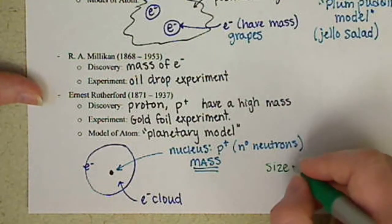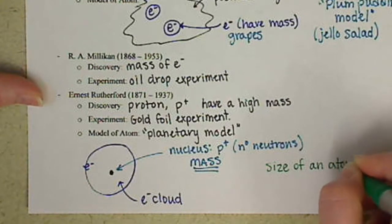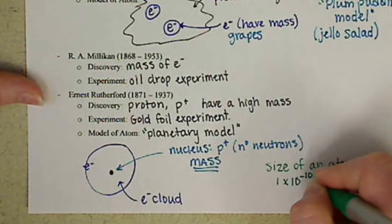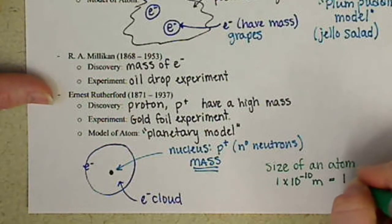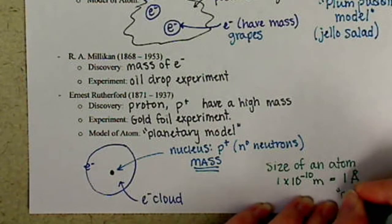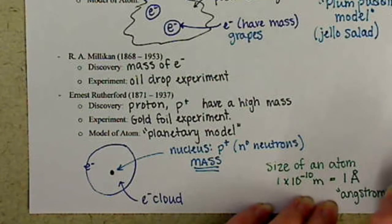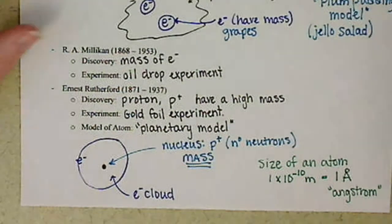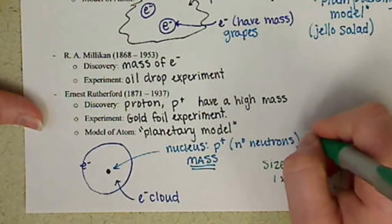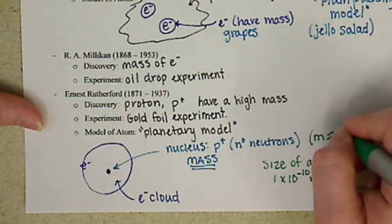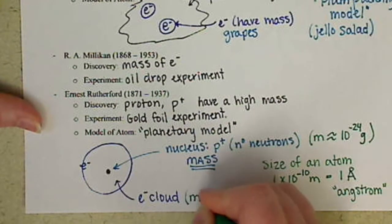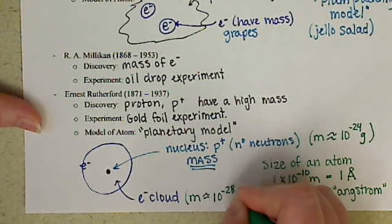You're going to watch a video next about the size of an atom. Kind of a cool video with some really cool animations. Basically it's 1 times 10 to the negative 10 meters, which we give a special unit to. We call it an angstrom, and that's a capital A with a little dot or degree symbol on top. We call this an angstrom. And the approximate mass of our protons and our neutrons. The protons and neutrons are roughly the same mass, and they have a mass of about 10 to the negative 24 grams. Okay, so fairly small.